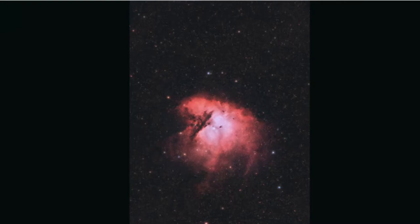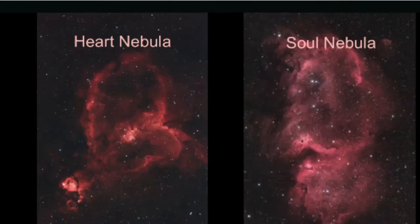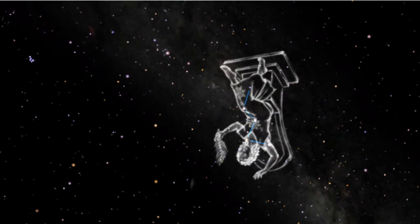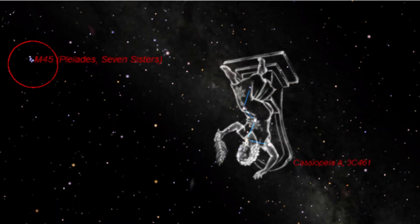At Cassiopeia's feet are two more, the Heart and Soul Nebula. With good binoculars or a telescope, you can see two open clusters of stars in Cassiopeia. Open clusters are groups of young stars that formed at the same time and remain loosely bound together. The Pleiades are a well-known example of an open star cluster.